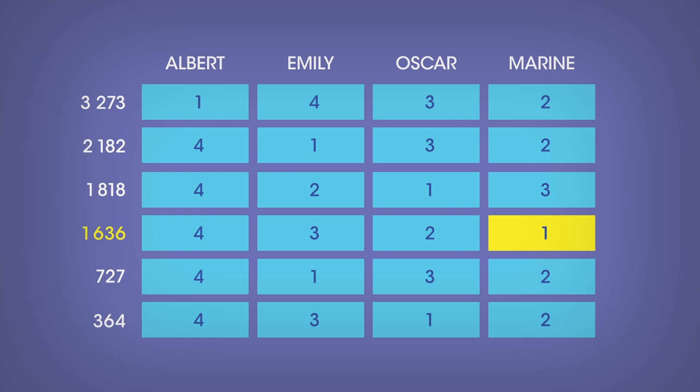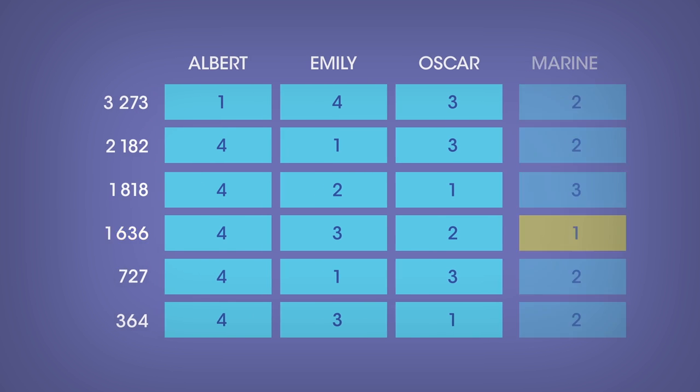On to the second round. With not enough rank 1 votes, Maureen is the next one to be eliminated. The 3,000 voters, having picked Albert as the first choice, now make Emily their third choice, and Oscar the second choice. The voters in line two of the table now make Albert their third choice, and Oscar their second choice. Let's also take a look at line four. We see that Oscar becomes the first choice, while Emily becomes the second, and Albert the third.